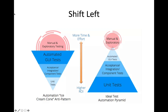You'll see companies that have a limited amount of unit testing, and they'll have more investment in acceptance and integration testing. And then the vast majority of their automation effort is focused on things like UI tests. And then they'll also have a large number of tests which haven't been automated yet and have to be performed manually.